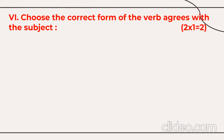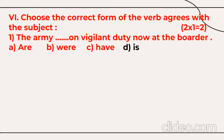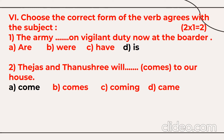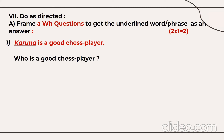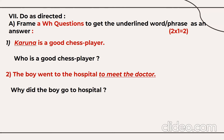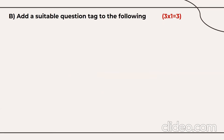Section A also includes remedial grammar with questions grouped by grammatical item. For subject-verb agreement: 'The army is on vigilant duty at the border' — army is singular so the verb is singular 'is.' 'Pages and Tanushri will come to our house' — not 'comes.' For WH questions: 'Karuna is a good chess player' — question: 'Who is a good chess player?' 'The boy went to the hospital to meet the doctor' — question: 'Why did the boy go to the hospital?'